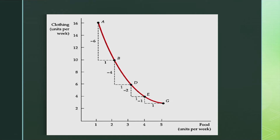As we can see, the number of units of clothes falls to 10, that is 16 minus 6. However, in moving from B to D, he is willing to give up only 4 units of clothing to obtain an additional unit of food. So the number of units of clothes falls to 6, that is 10 minus 4, and the number of units of food increases to 3. In moving from D to E, he will give up only 2 units of clothing for 1 additional unit of food. Hence, it is clear that the more clothing and less food a person consumes, the more clothing he will give up in order to obtain more food.